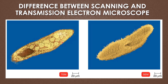In the SEM the electron beam passes over the surface only, but in the TEM the electron beam passes into the sample. So the SEM is used to observe the surface morphology of the cell, while the transmission electron microscope is used to observe the internal structure of the cell.